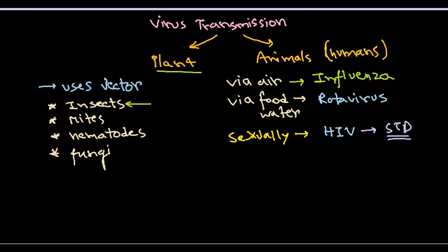And finally, the fourth type of transmission can be via vectors. Now the vectors in this case also, it is usually sometimes rodents.